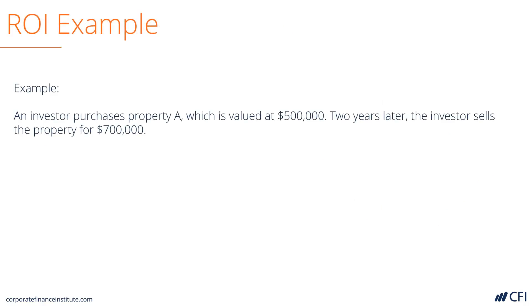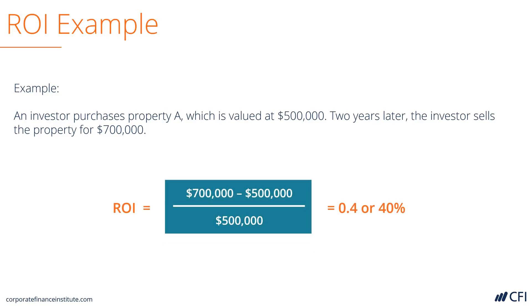Let's look at some examples. Imagine an investor buys a property for $500,000. Two years later it sells the property for $700,000, so its gain is $200,000. That equates to an ROI of 40%.